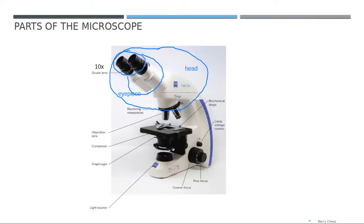The ocular lens has the ability to enlarge an object 10 times bigger than the original size. This part, still part of the head, is what we call the nose piece. Because this nose piece can rotate, it is called the revolving nose piece.